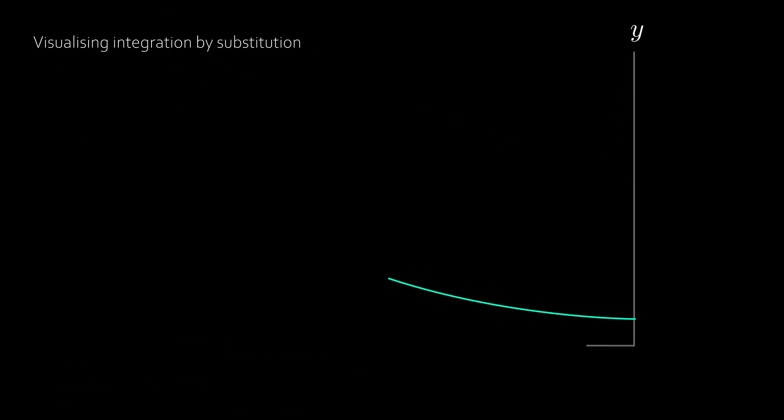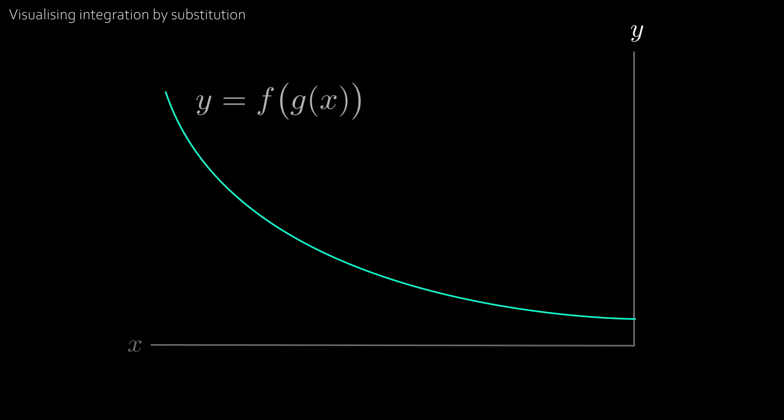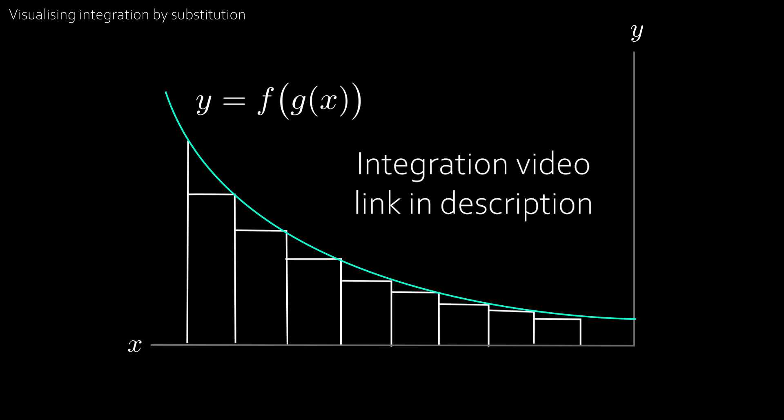Let's start with a graph of y equal to f of g of x, and recall that we can approximate the area under the curve with rectangles. To get the exact area, we take the width of the rectangle and make it as small as possible. If this doesn't sound familiar, check out our integration video linked in the description below.